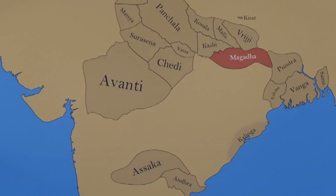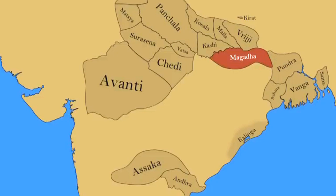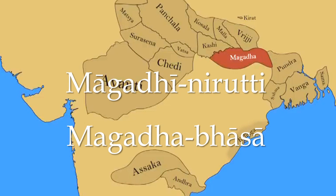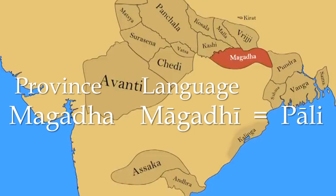The commentaries come in and fill this void and characterize the language spoken by the Buddha as Magadhi-Niruti, the Magadhi way of speaking, and Magadha-Bhasa, which is the language of Magadha. Magadha is the name of the province where the Buddha spent much of his teaching career, and Magadhi is the dialect spoken in that province. The Theravada tradition equates the language which the Buddha spoke with Magadhi, which is the same as what we now call Pali.